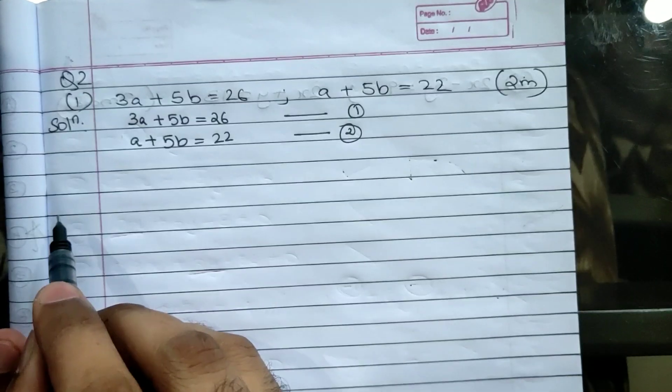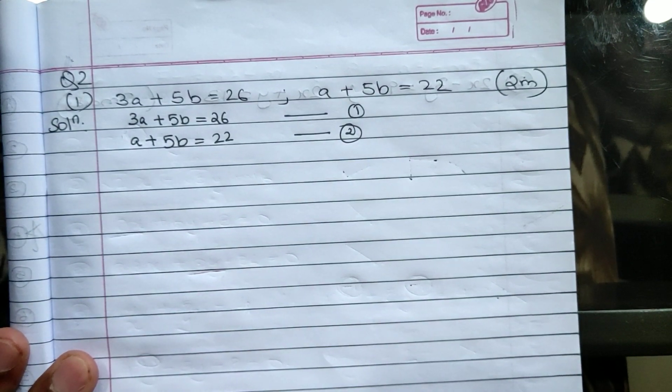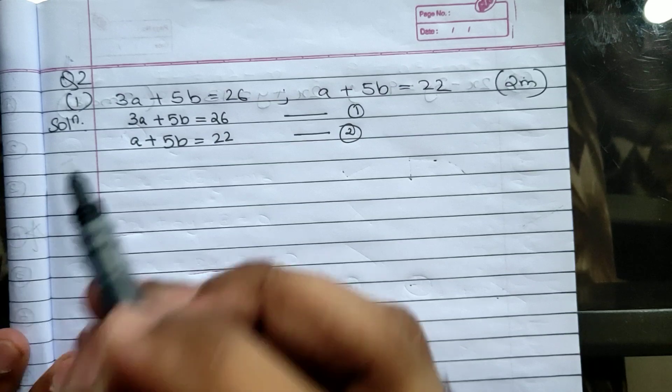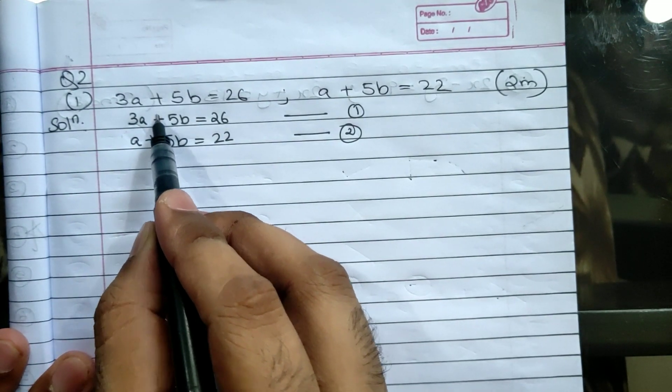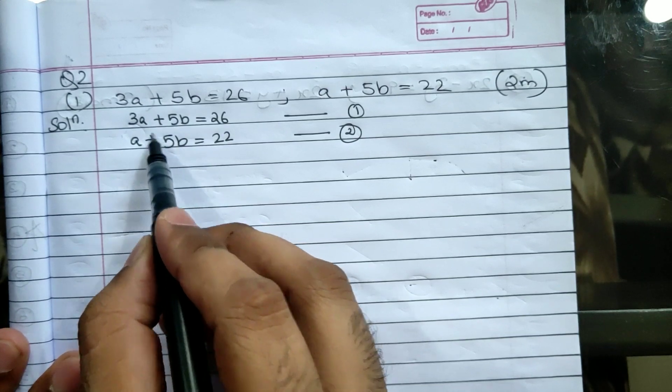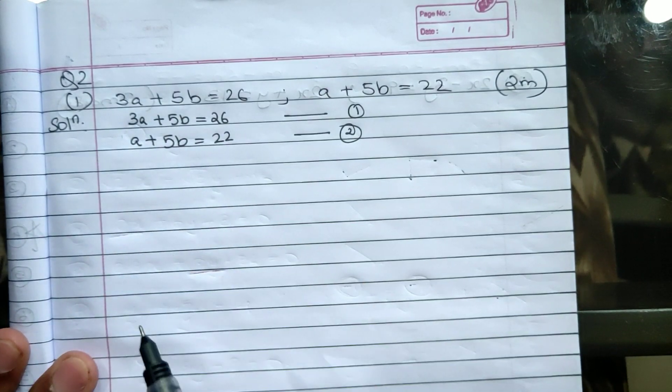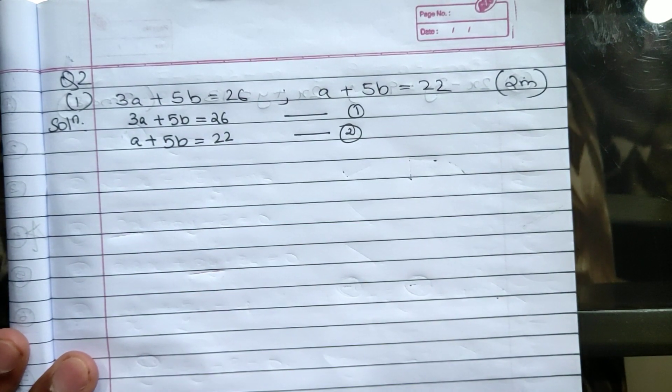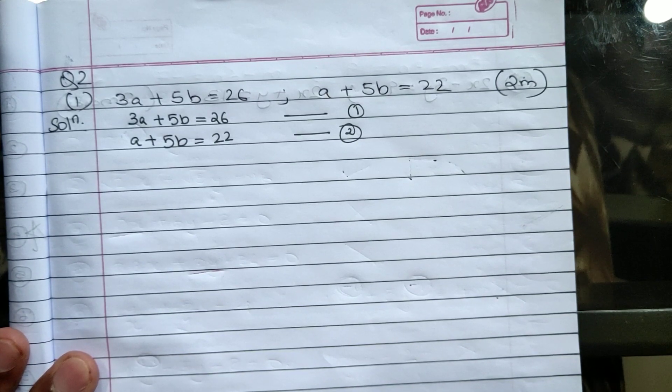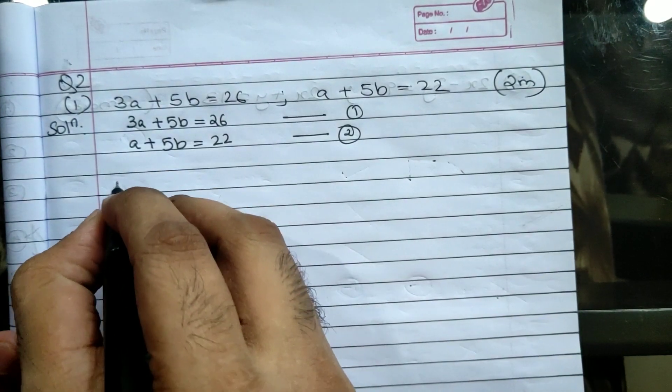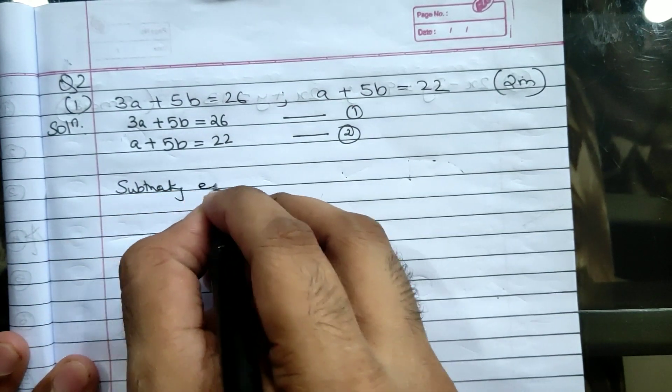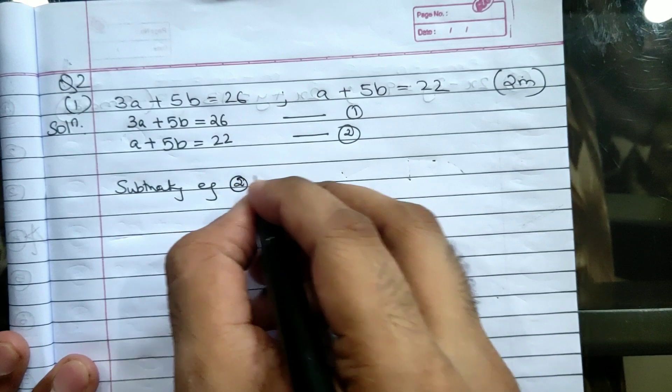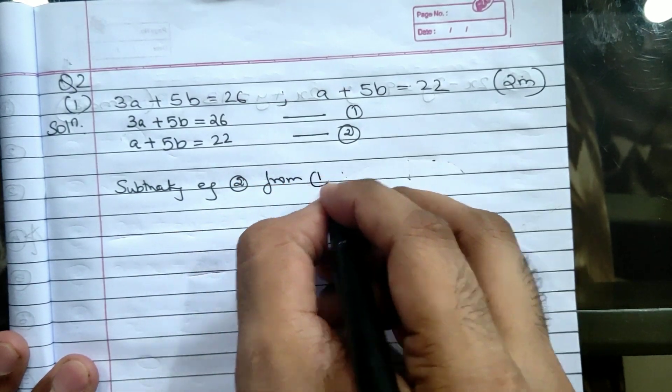So to eliminate b we can either subtract or add. Whether we add or subtract depends on the sign. Here with 5b the sign is positive, here the sign is plus. So when sign is same, we will always subtract the equation. So we will do minus.